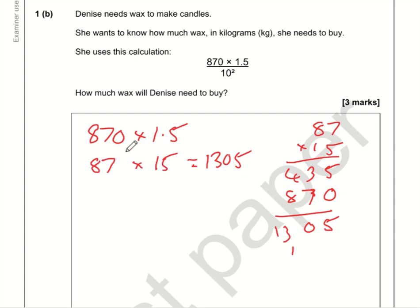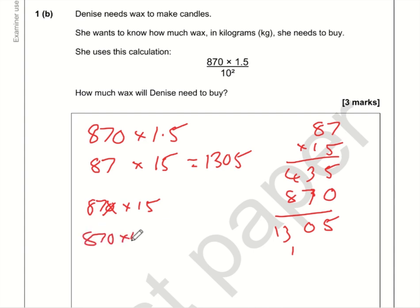If you didn't like that method, normally with decimals I tell people to ignore the decimal and work it out afterwards. So just do 870 times by 15 — to do that, I would have done 87 times by 15 and then put a zero on the end. So 870 times 15 is 13050, and then we want one decimal place because the question has one decimal place. So it's 1305.0, which is the same as 1305.